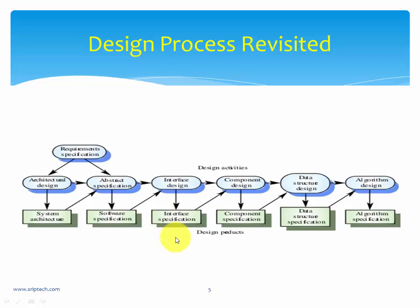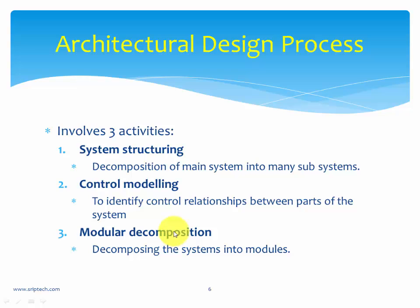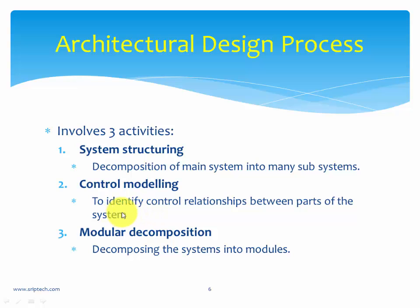In architectural design there are three different activities: system structuring, control modeling, and modular decomposition. System structuring means decomposition of the main system into many subsystems — when you define an architecture you have to define what subsystems make up the main system. Control modeling identifies the control relationships between parts of the system. We shall focus on system structuring in this session, while control modeling and modular decomposition will be covered in the next video series.